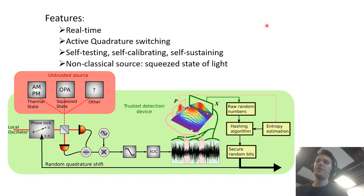Our QRNG is real-time, all the data acquisition and the quadrature switching was done live as well as the beam blocking for estimating the classical noise of our detection device and the shot noise. So in that regard it's self-testing, self-calibrating and self-sustaining.